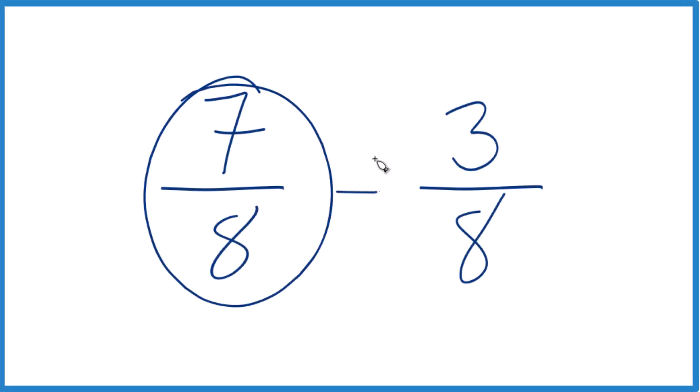So if you need to take 7 8ths minus 3 8ths, here's how you can do that. When we subtract fractions, or when we add fractions, we want to make sure we have common denominator.